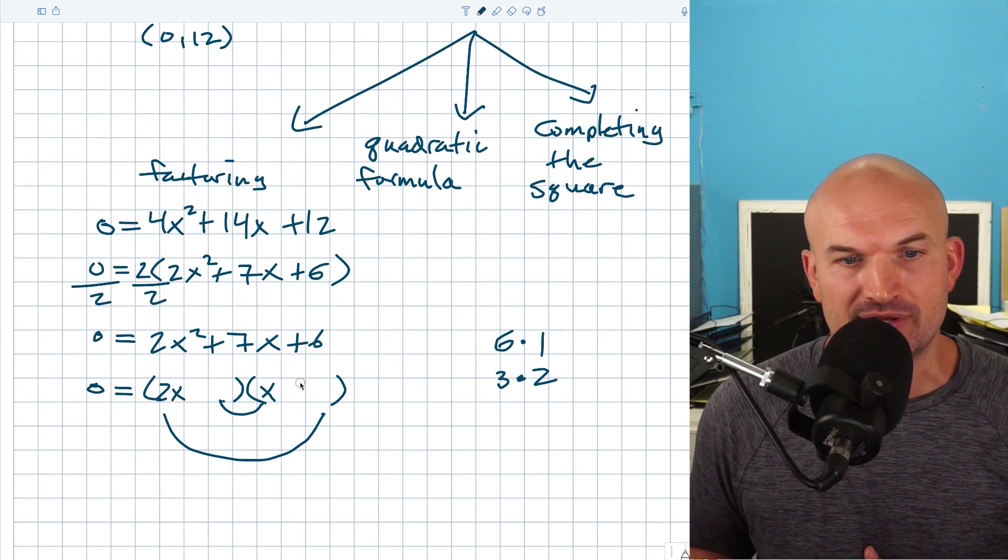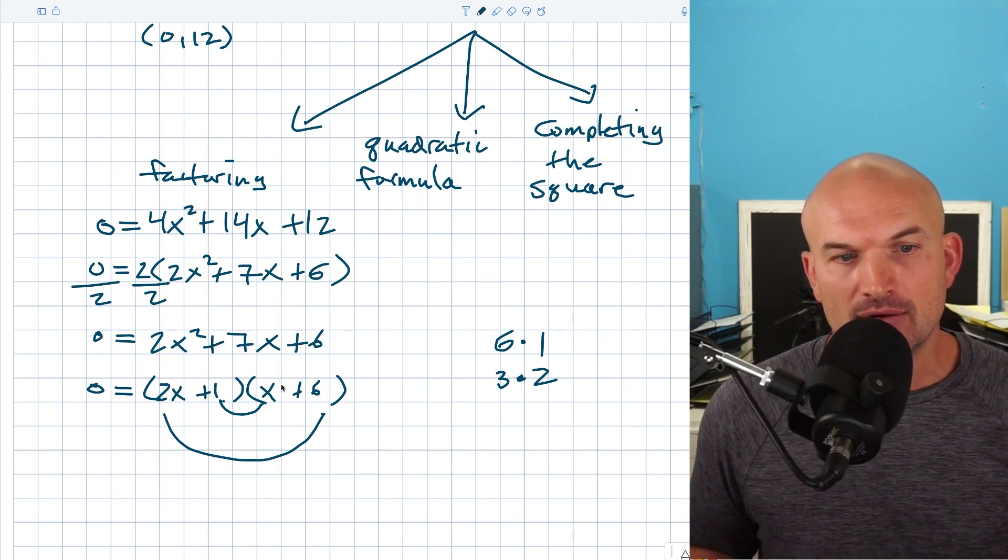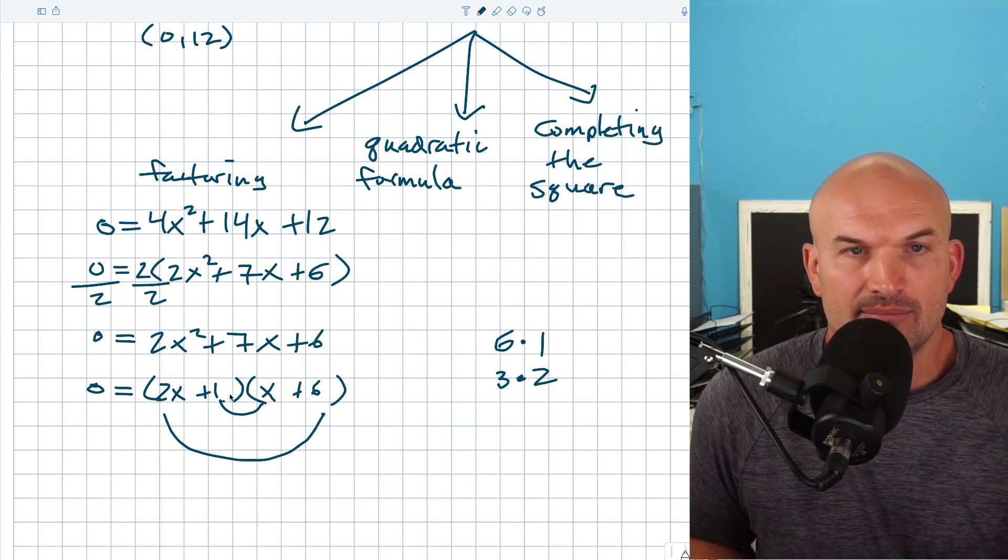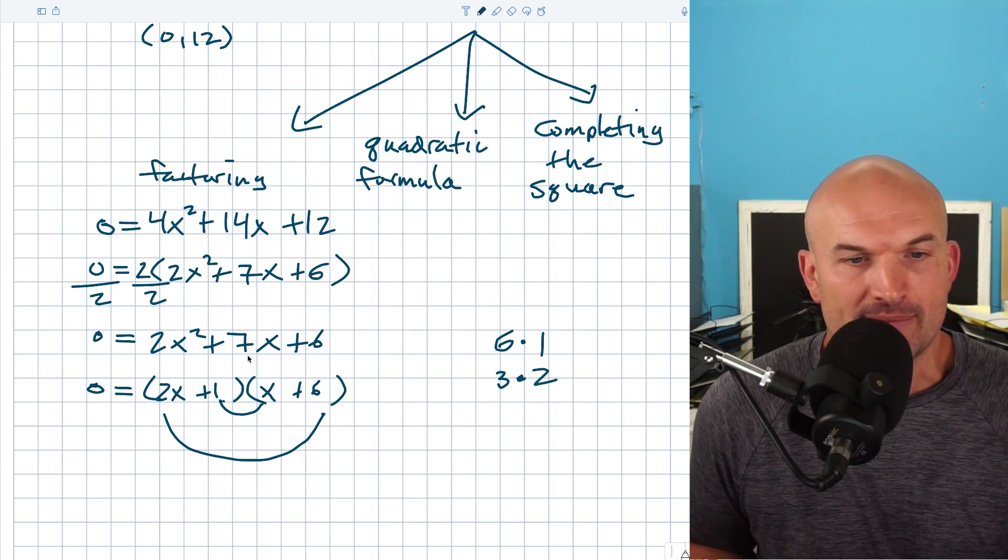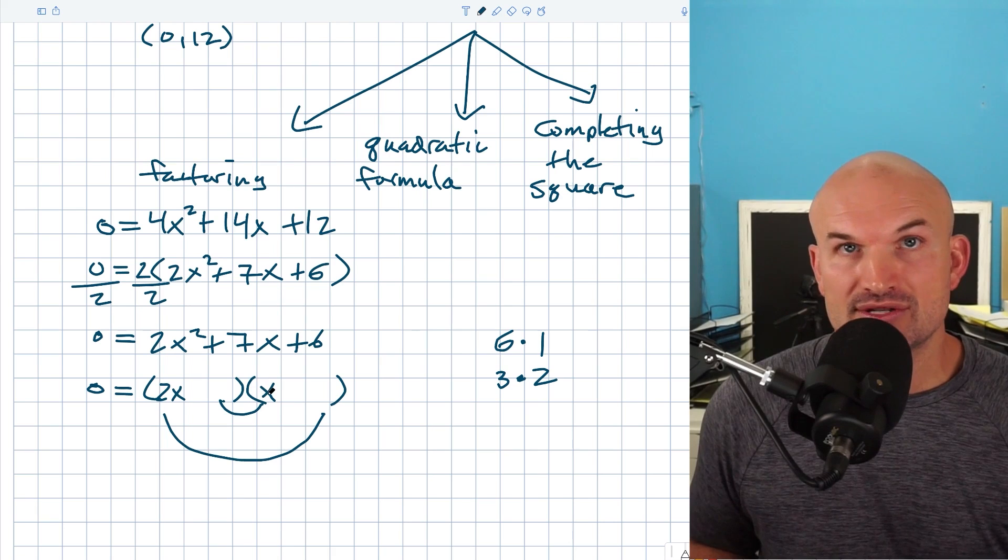Like for instance, you wouldn't want to do this. You wouldn't want to put a 6 here and a 1 here, right? Because 2x times 6 is 12x plus 1x is 13x. That's already bigger than seven. So I'm trying to get really close to 7x.